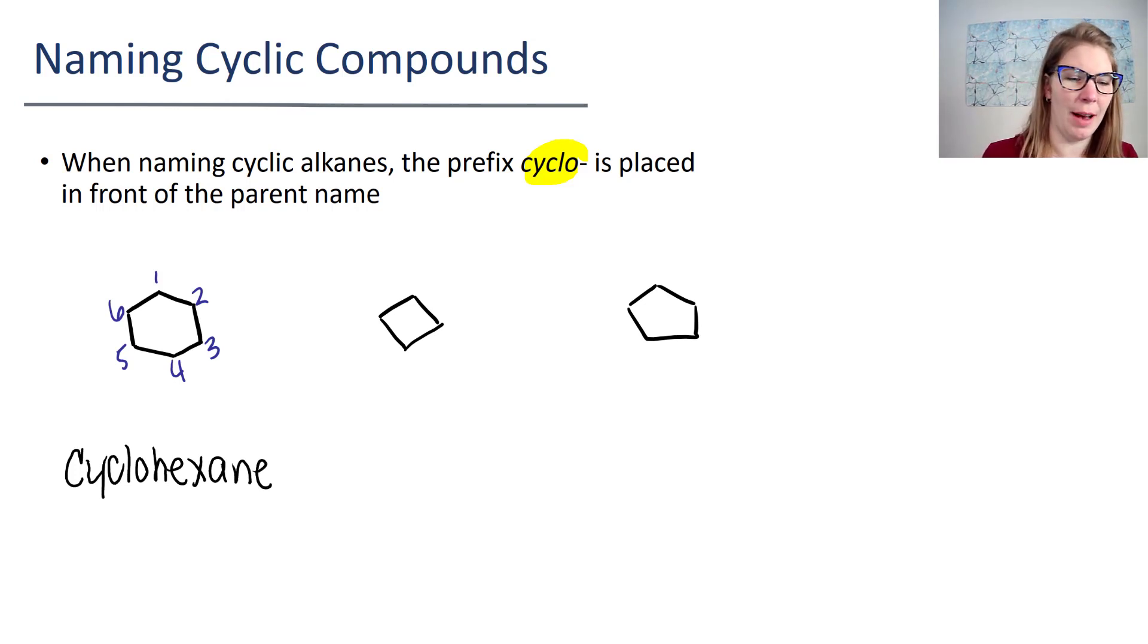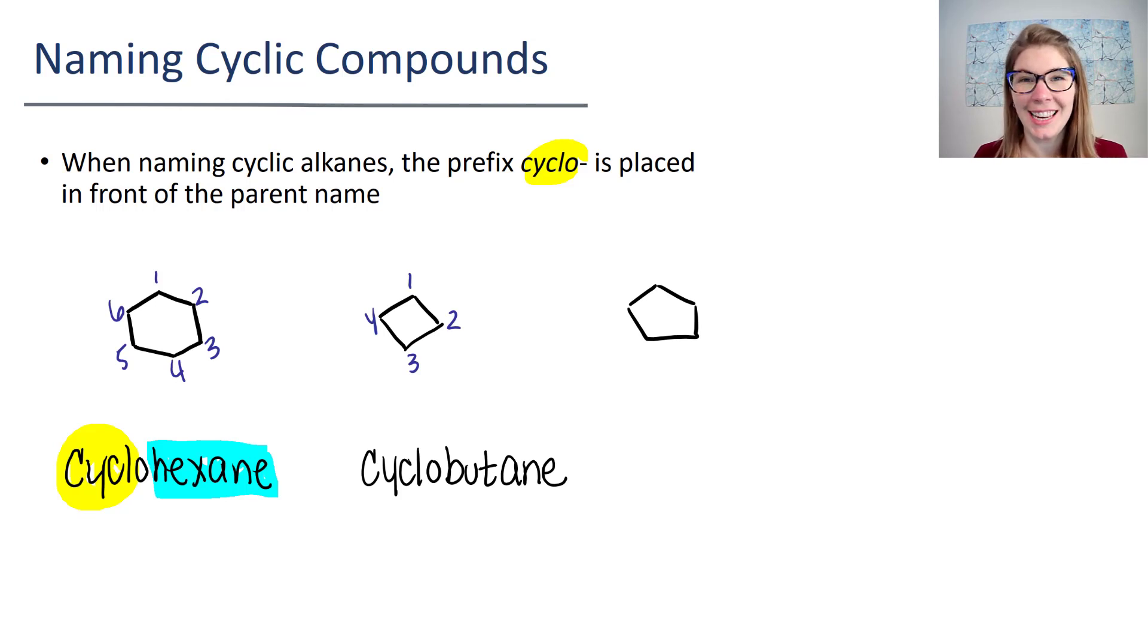So again I have my parent here of the hexane and I'm putting the cyclo out in front of that. Let's name the next two. For the next one I have four carbons, and so again I have a cyclo prefix because this is a ring. I have four carbons so that's bute, and then I have an ane suffix because the ane is for plain old alkanes. For the last one you should be able to come up with the fact that this one is cyclopentane because there are five carbons in a ring.